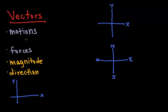Vectors have a lot of applications in physics, from types of motion, such as displacement, which is change in position, velocity, which is rate of change in displacement, and acceleration, which is rate of change in velocity.